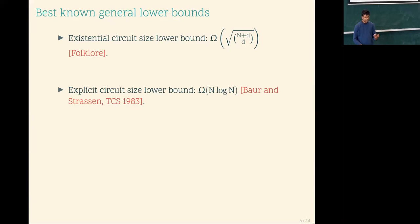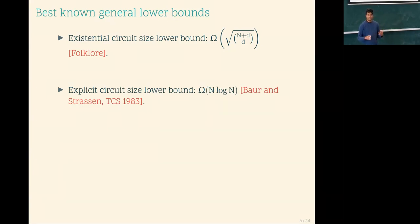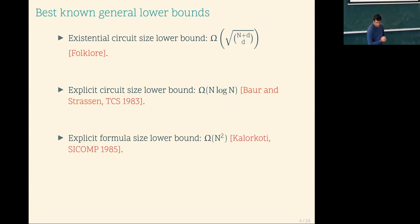The best known circuit size lower bounds are super-linear, as with Boolean complexity, making things very weak. For those who also do machine learning, the Baur-Strassen result is also familiar because back-propagation uses similar techniques to this lower bound. If you restrict yourself to formulas, you have N-squared lower bounds. Overall, the situation is similar to Boolean circuit complexity — things are wide open.